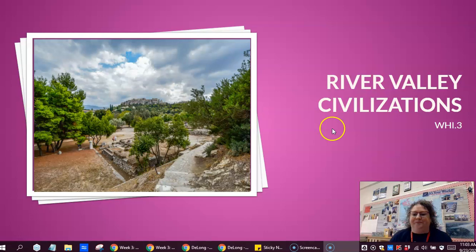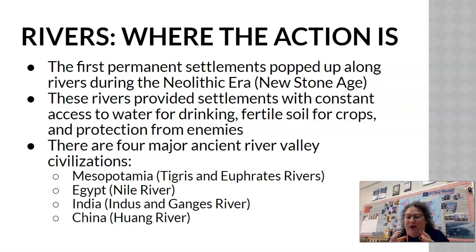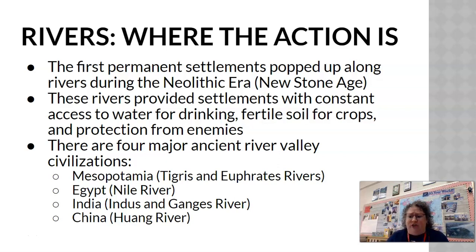So, rivers — this is where civilization is developing. When you think about why along a river, it makes perfect sense: you need water for agriculture, water provides a source of drinking, as well as transportation. Water is life. The first permanent settlements develop along rivers during the Neolithic era, where they find fertile soil. The most fertile soil is along the riverbanks as it spreads out. Each of these river valley civilizations we'll talk about experienced flooding, and when the waters come up over the banks they bring fertile silt, providing great areas for growing crops.